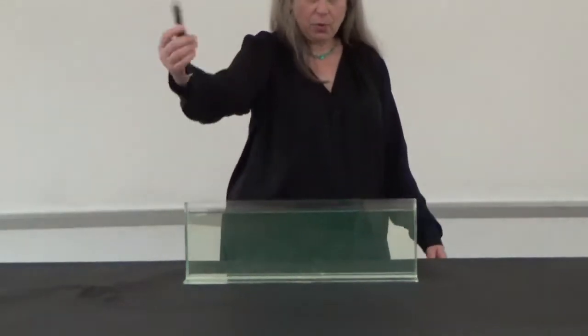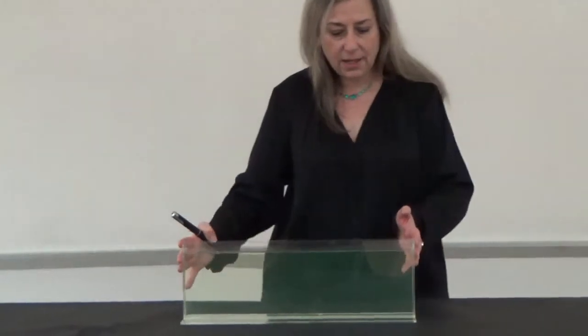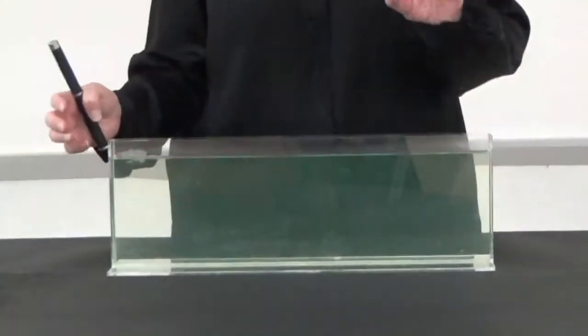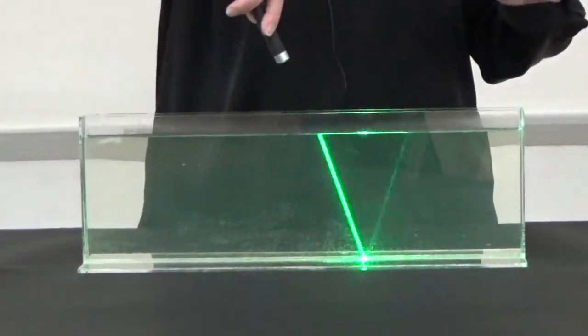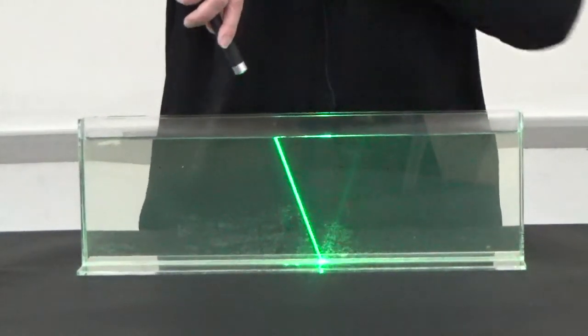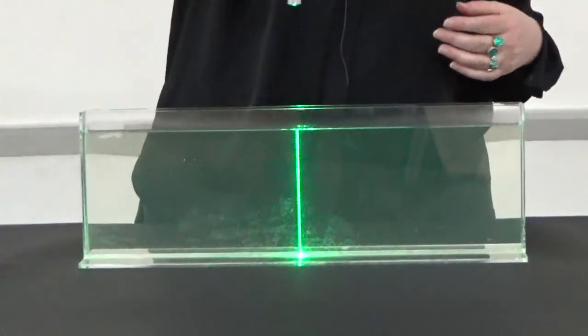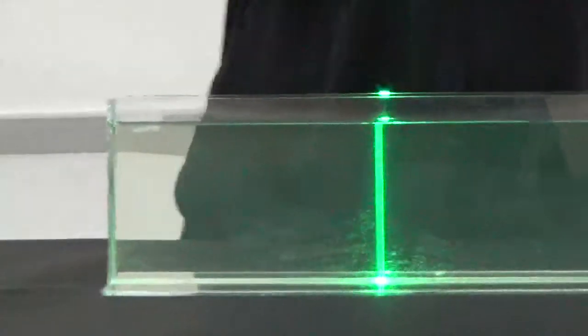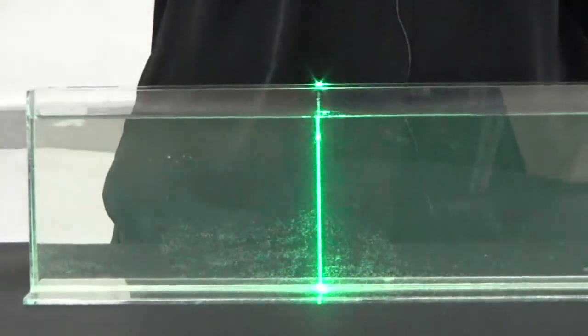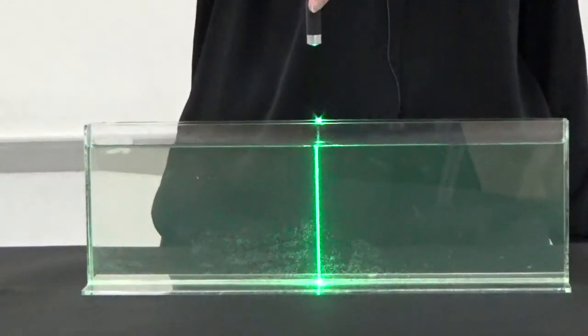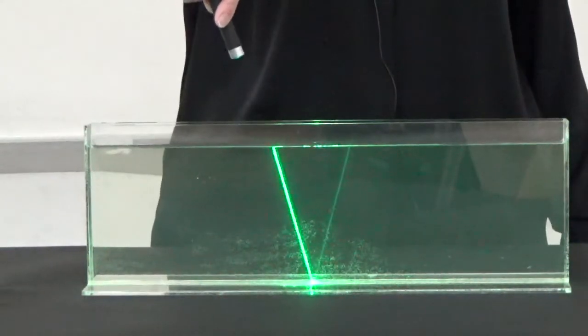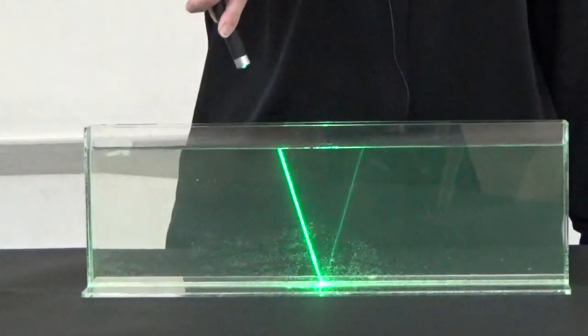So I have a laser pointer here. I have a tank of water with a little bit of coffee creamer so it scatters so you can actually see the laser beam in water. I'm gonna show you that if we go straight in at normal incidence, so perpendicular to the water surface, we can see that there's reflection. You can also see reflection at the bottom there if I go in at the angle.